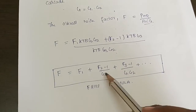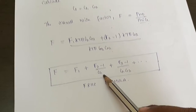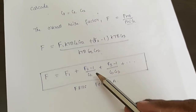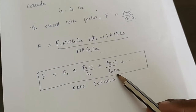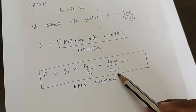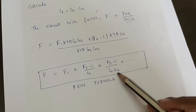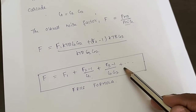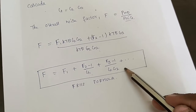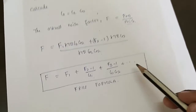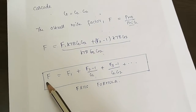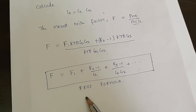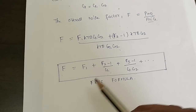If more systems are added, the pattern extends. For three amplifiers in cascade a third term (F3 - 1)/(G1·G2) is added. For four systems it becomes (F4 - 1)/(G1·G2·G3), and so on. We can find the overall noise factor of any number of amplifiers connected in cascade using this Friis formula. Thank you.